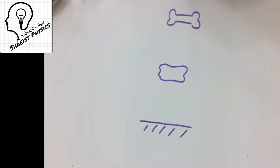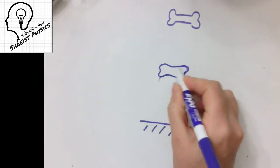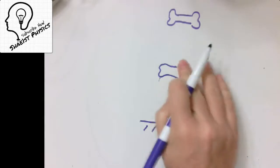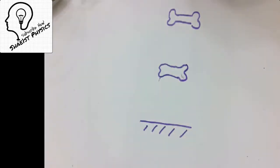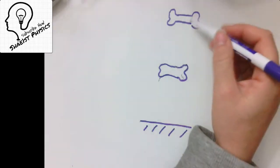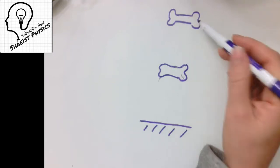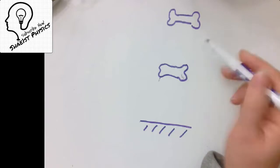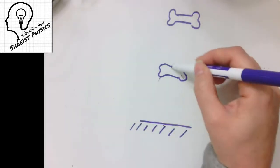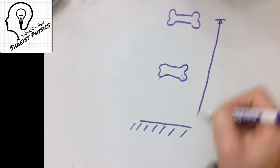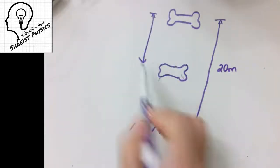The first step to solving a problem is always to change the representation and get it into a sketch. It is very difficult to solve a problem when you're just staring at words. When we're dealing with energy, just like with projectile motion, we draw our object in two different locations. This is the initial position and this is the final position — which is always the position you're interested in. We're starting out 20 meters above the ground.